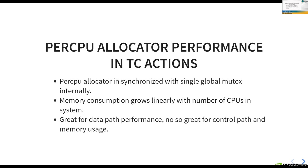Another challenge was the per-CPU allocator. Most actions internally use it for stats. The per-CPU allocator is synchronized by a single global mutex — not RTNL, but a dedicated mutex that is still global and shared by all per-CPU users. Additionally, per-CPU allocator memory usage grows linearly with number of CPUs, as it must allocate memory per CPU in the system. While great for data path performance, it's not ideal for control path performance or memory usage.